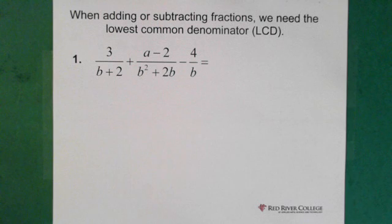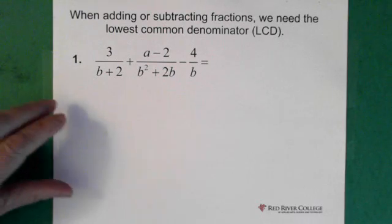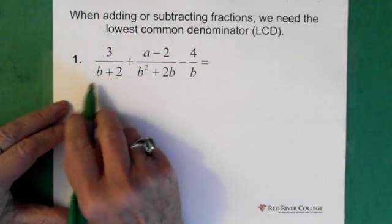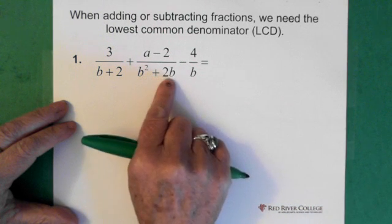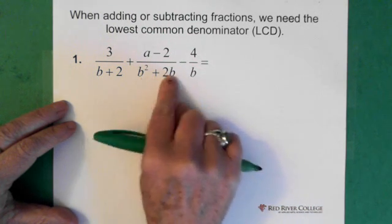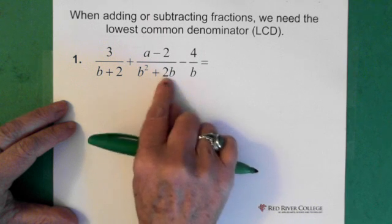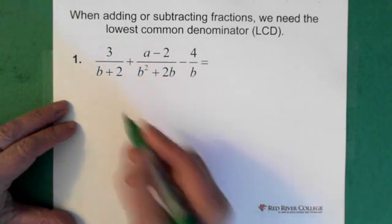Okay, so again what we need to do is figure out what the lowest common denominator is. We can see here we have b + 2 in the denominator here, b² + 2b and b. We can see here that this is factorable, so what we're going to do is just factor that piece.